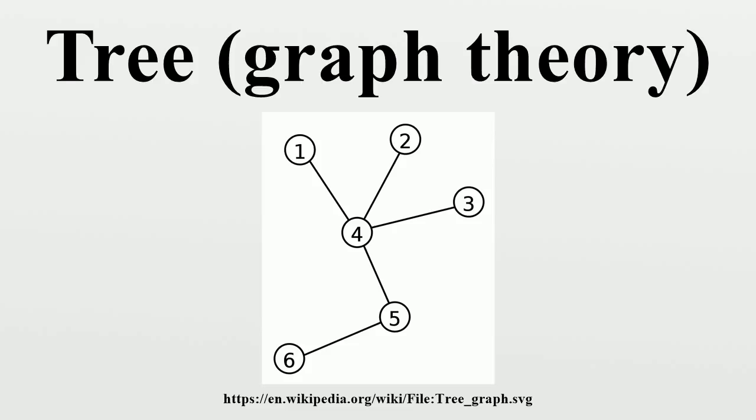Other terms for this include arborescence, outarborescence, outtree, and even branching. The term tree was coined in 1857 by the British mathematician Arthur Cayley.